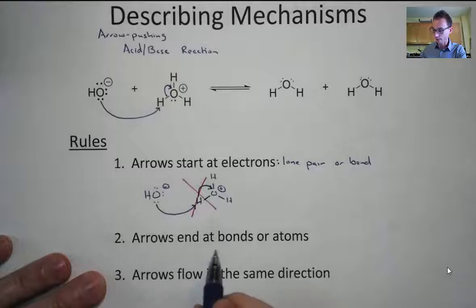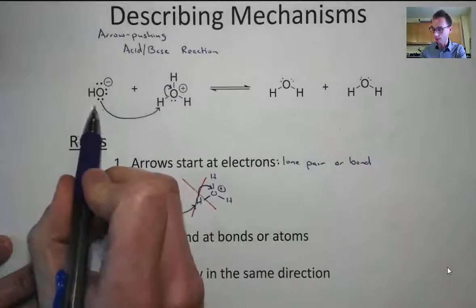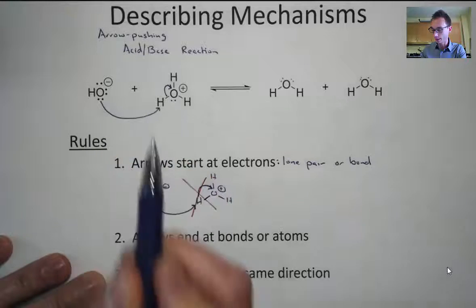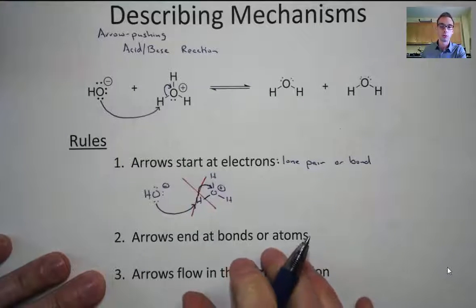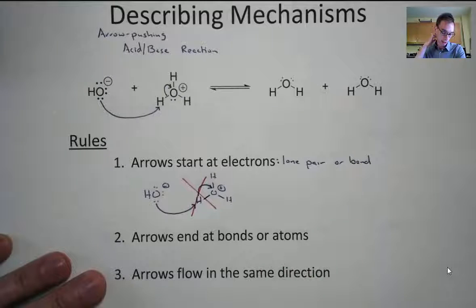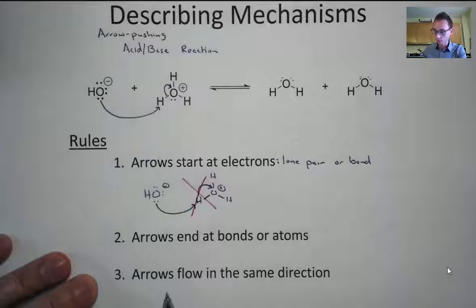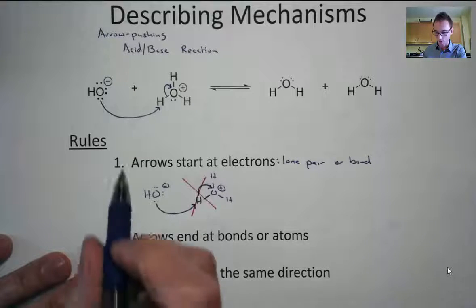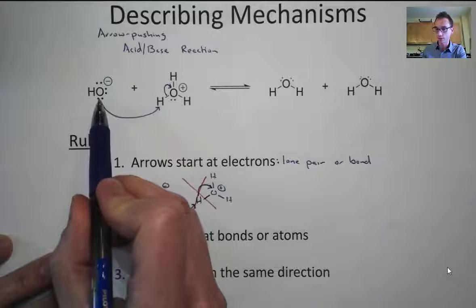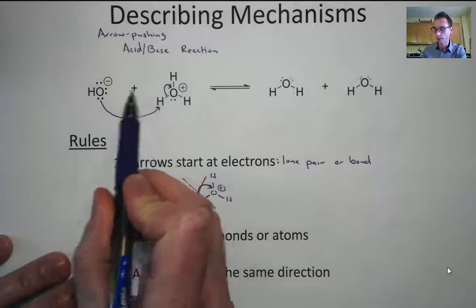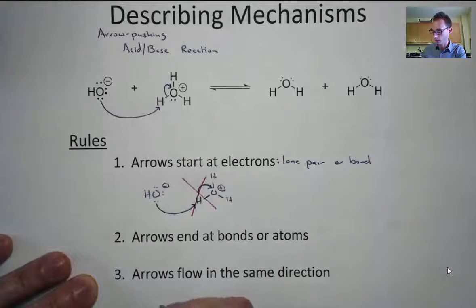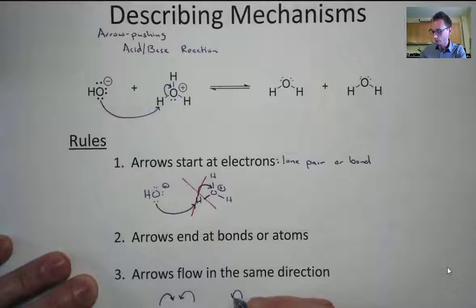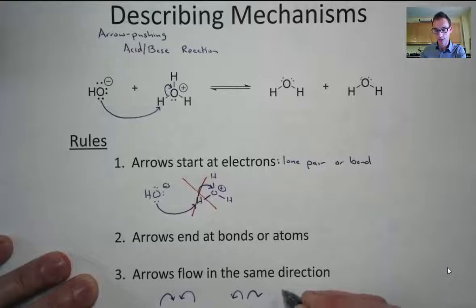It's also important that the arrows end at bonds or atoms. In this case the arrow ends at an atom. We'll see examples where we're forming new bonds with the arrows, so they have to end at a bond as opposed to an atom. One other thing to note is that the arrows always flow in the same direction — here, the arrows are all flowing to the right. You never have arrows pointing in opposite directions; they're always going in the same direction.